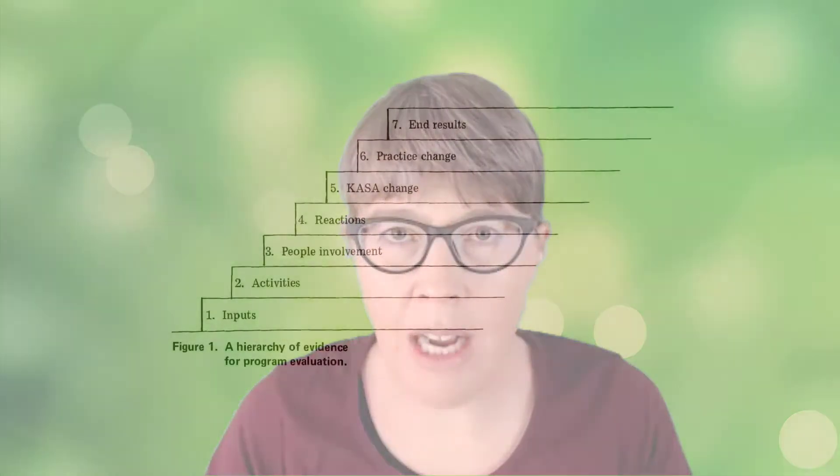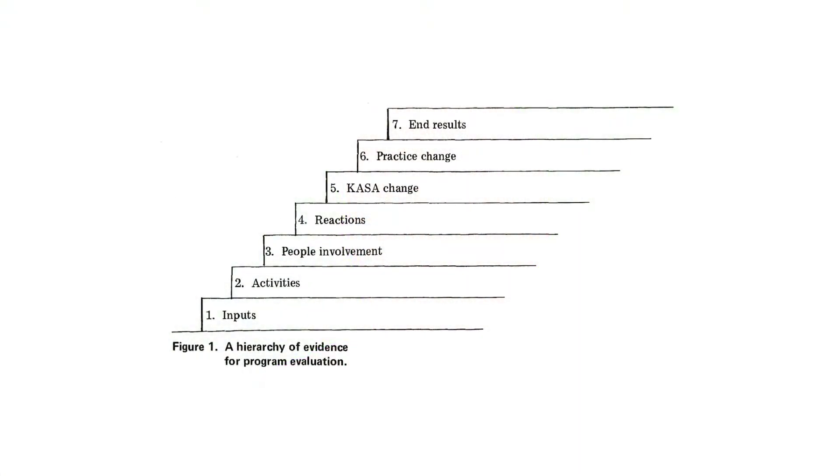The first step — draft out the pathways or explanations — starts with defining our outcomes, the results for our program. This is where the theory of change links into Bennett's hierarchy. Is the outcome you're seeking knowledge, attitude, skills, or aspirational change? Is it practice change, and if so, what kind of practice change? Or maybe it's at the top of Bennett's hierarchy and it's social, economic, environmental, or cultural change.